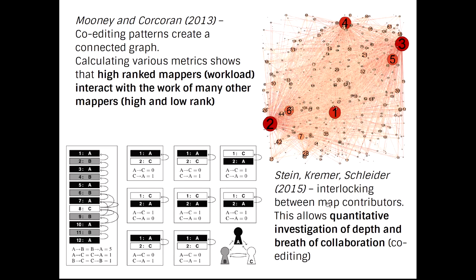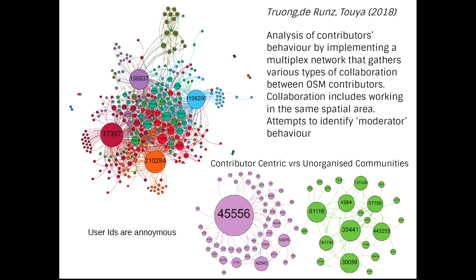Moving on from that, Stein and others looked at our work and came up with the idea of interlocking: mappers actually become interlocked with each other — I edit your work, you edit person C's work, and person C edits mine — forming a kind of interlocking chain. That allowed a more quantitative look at the depth and breadth of how people edit each other. Very recent work by Guillaume Touya in Paris, looking at multilayered and multiplex networks, tries to see if editors or mappers act as moderators in an online sense of their local community — where in some communities one particular mapper is very contributor-centric, whereas in others no particular mapper is dominant.